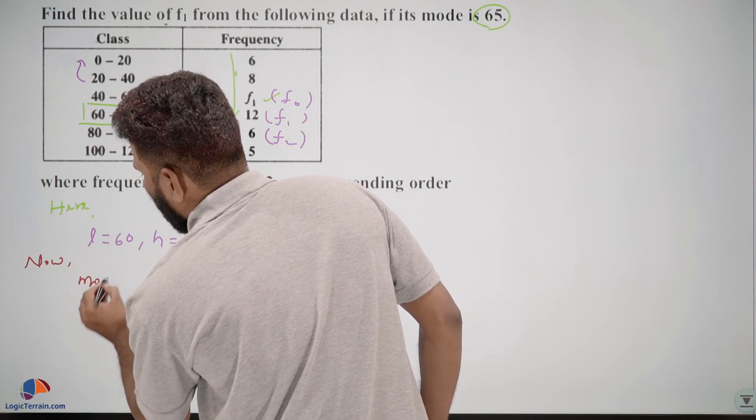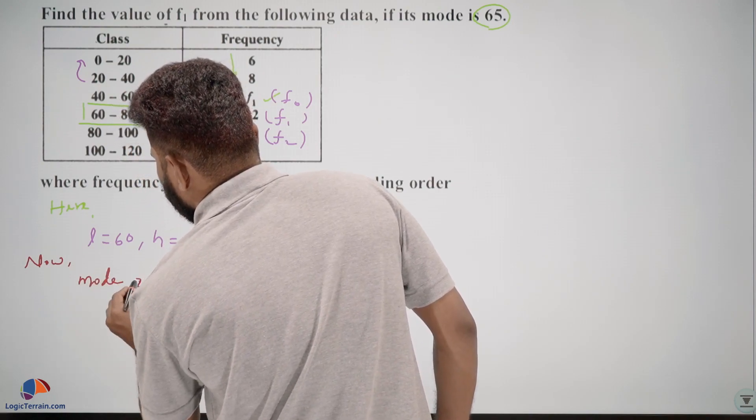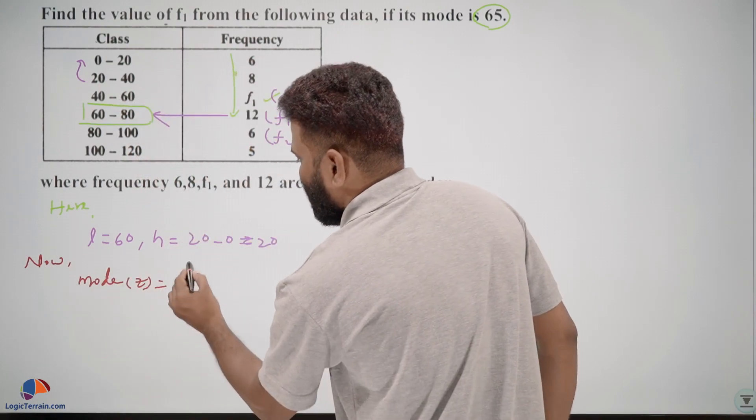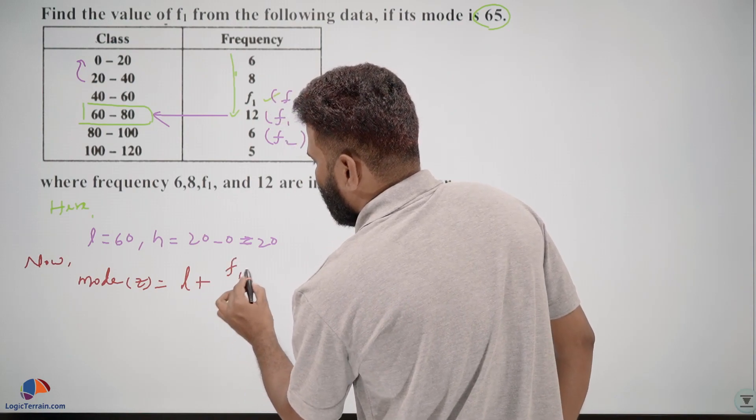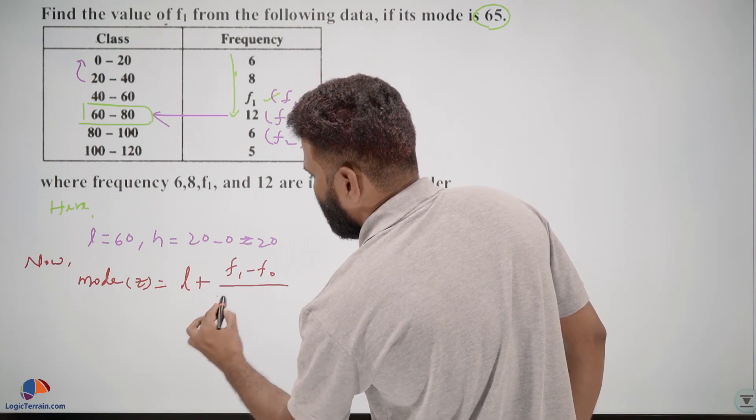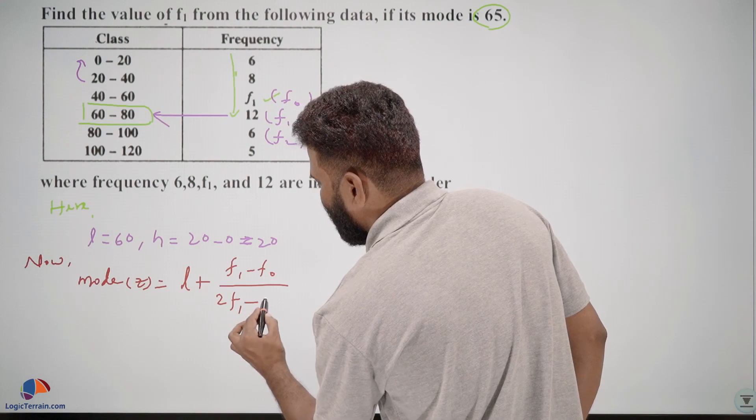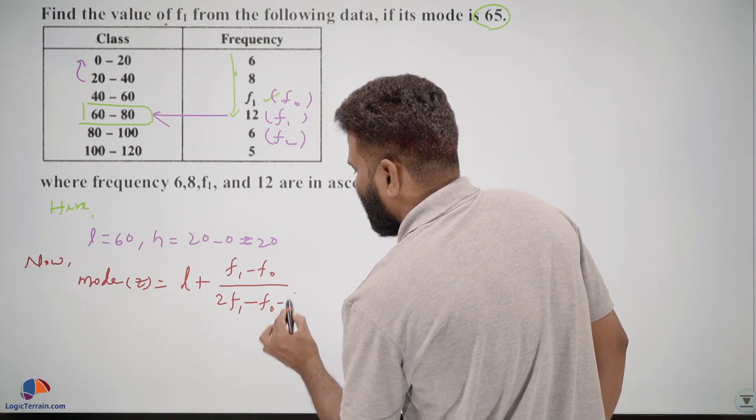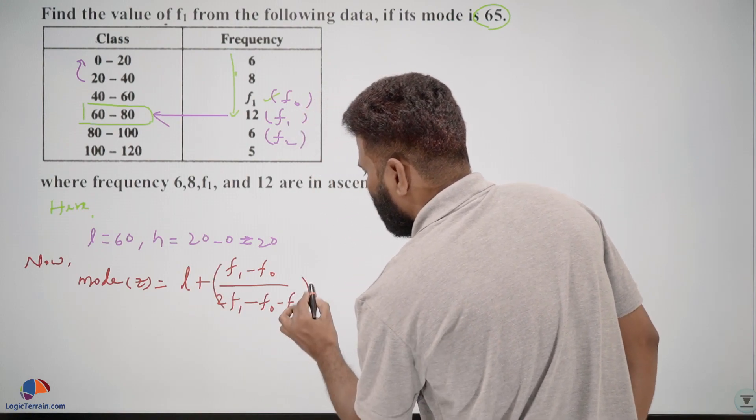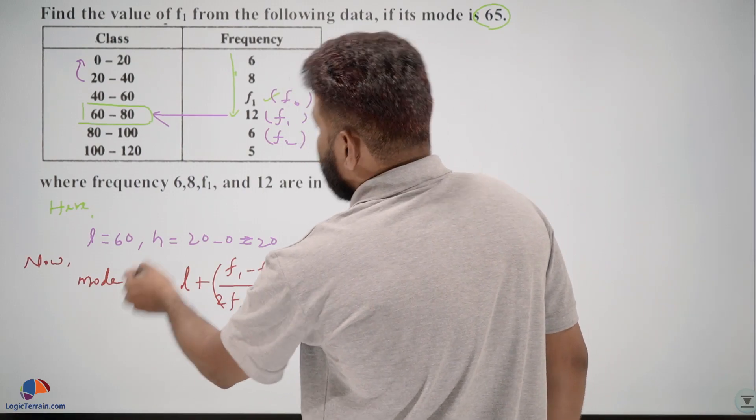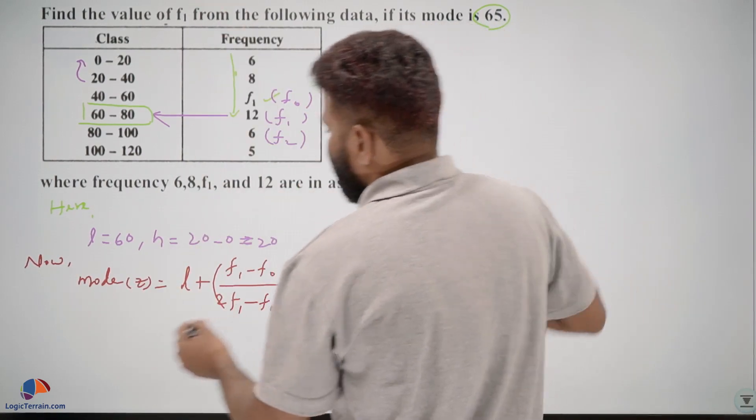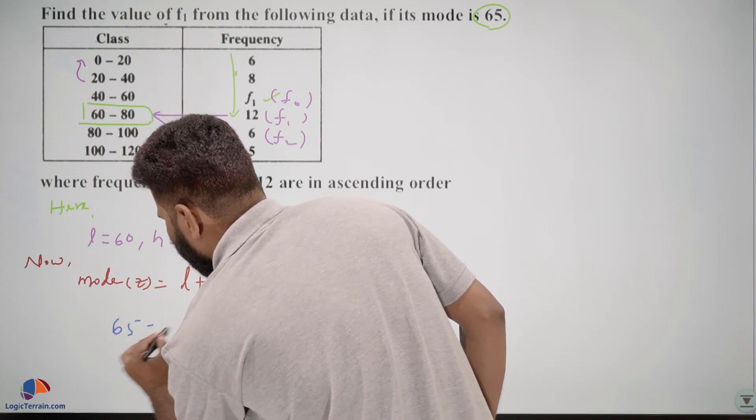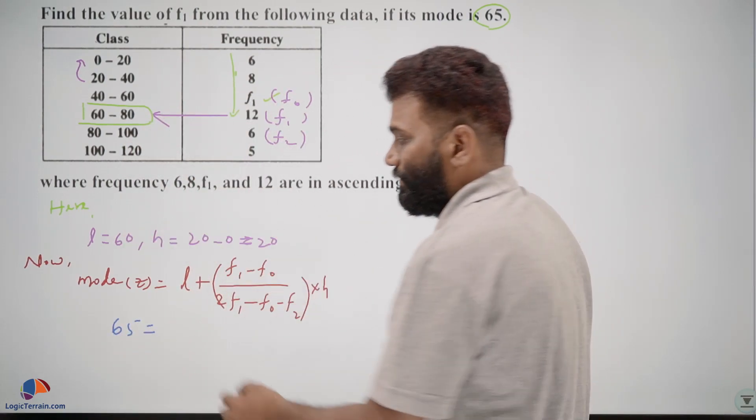Now mode is equal to l plus f1 minus f0 upon 2f1 minus f0 minus f2 into h. And it is given that mode is 65, so 65 equals, substitute the known values.